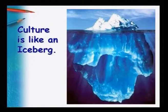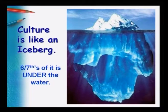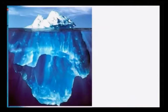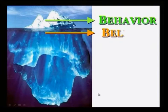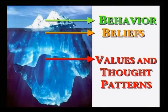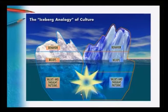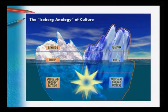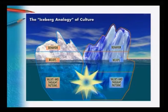Culture itself is like an iceberg, because six-sevenths of the iceberg is under the water. Only the topmost part — behavior — is revealed to you, and this is called the iceberg theory of culture. Below behavior are beliefs, and deeply embedded at the bottom are values and thought patterns. These cannot be changed easily. When two people come together, the clash happens at the level of values and thought patterns, and behavior only superficially expresses it.